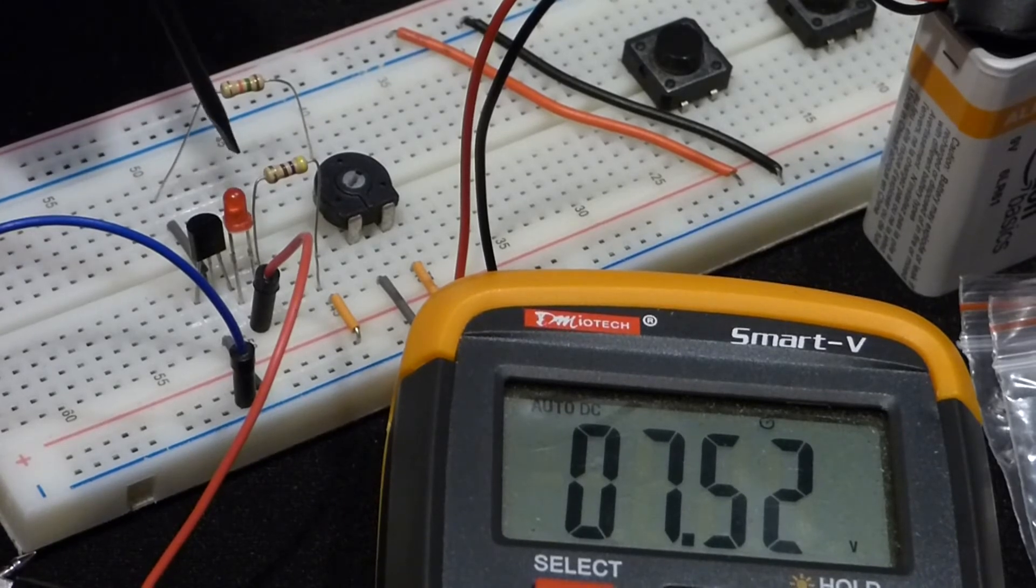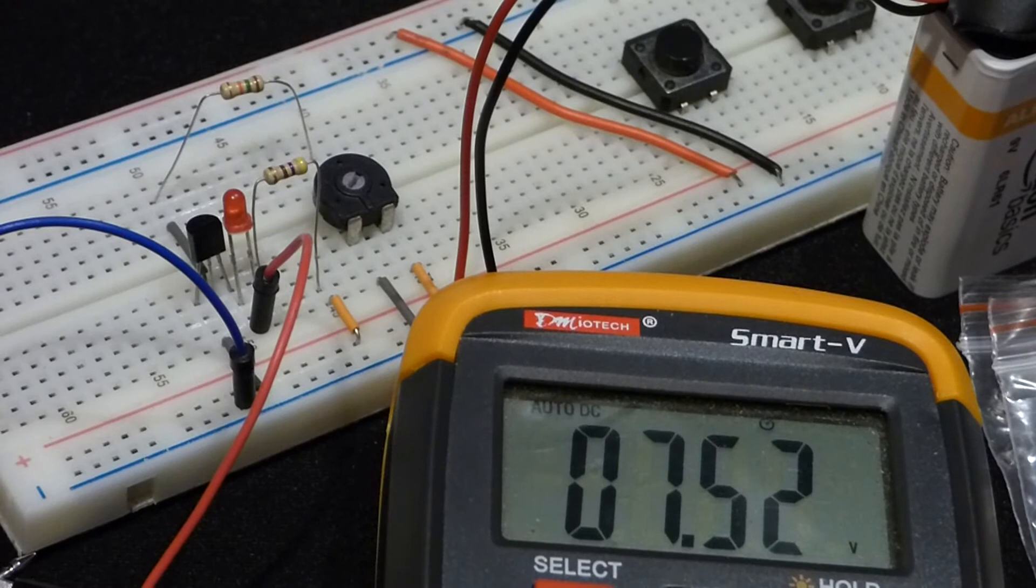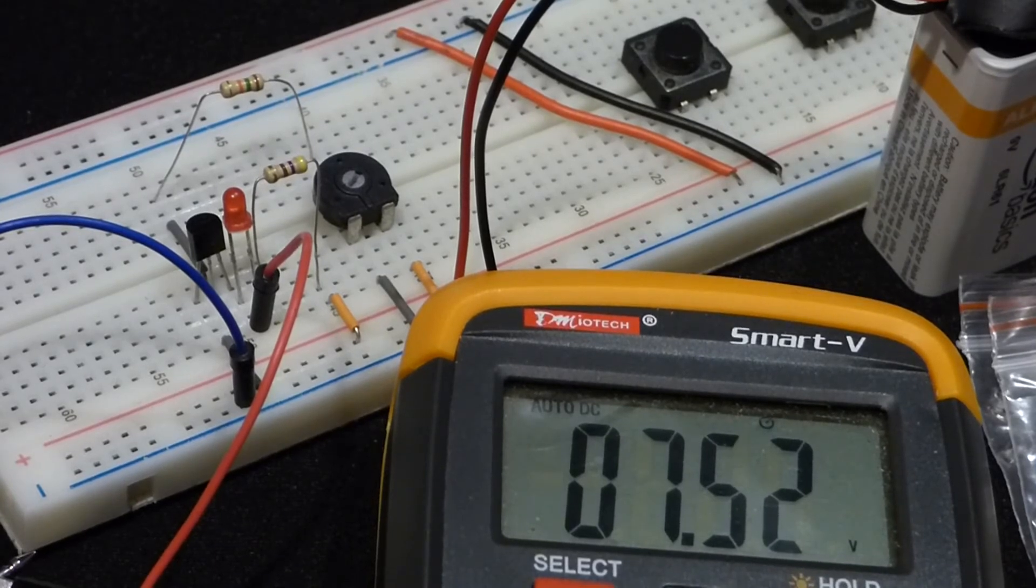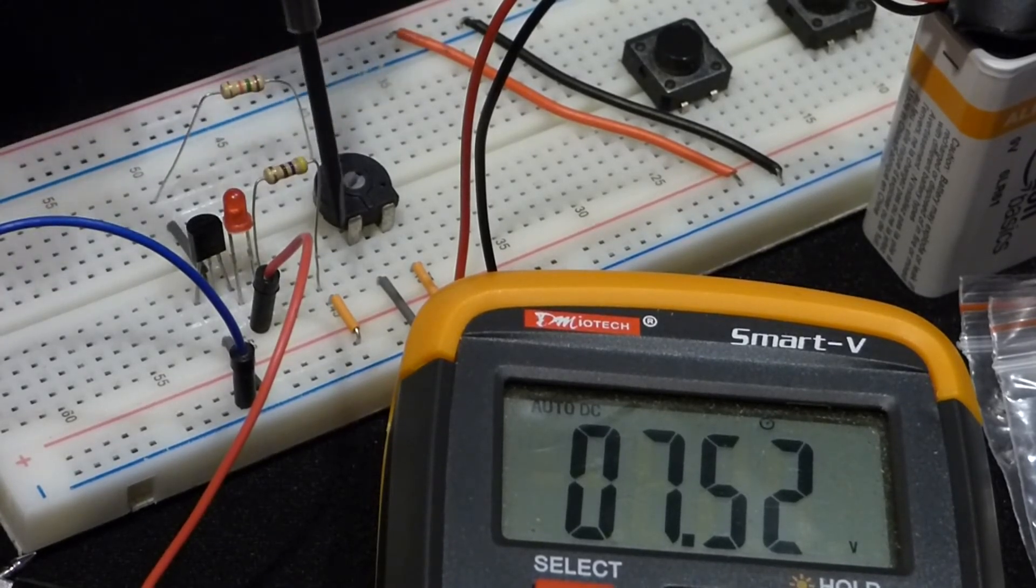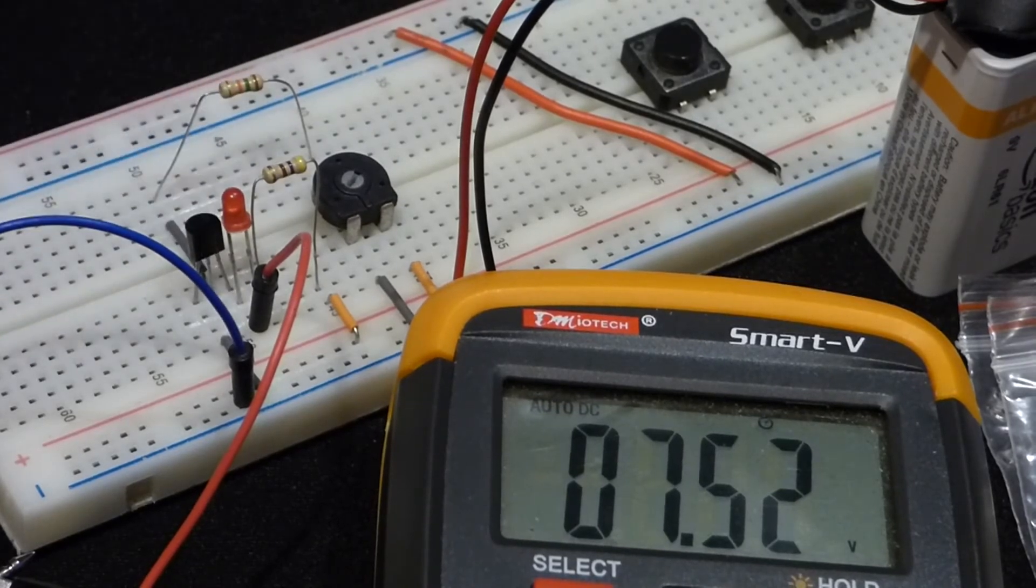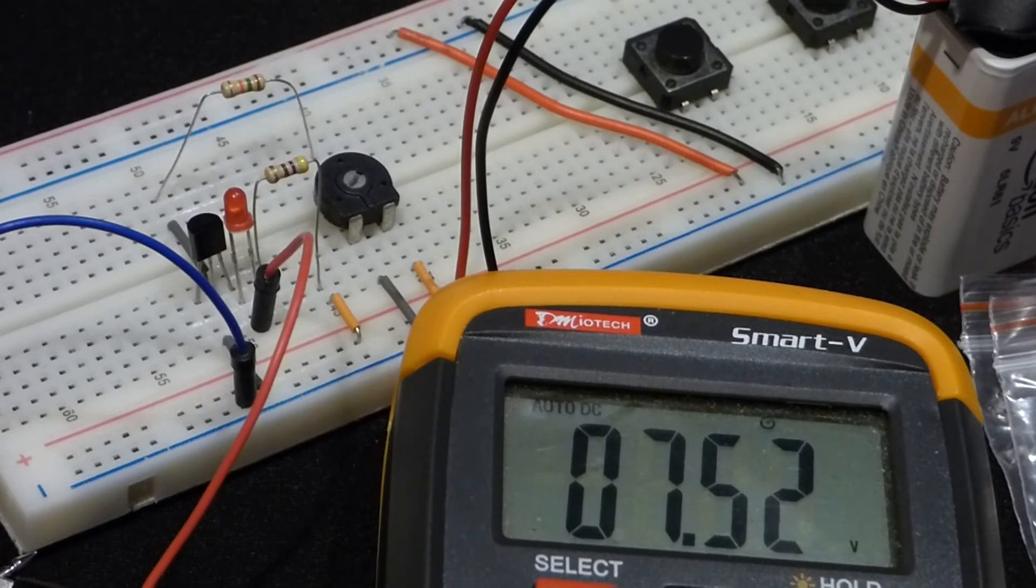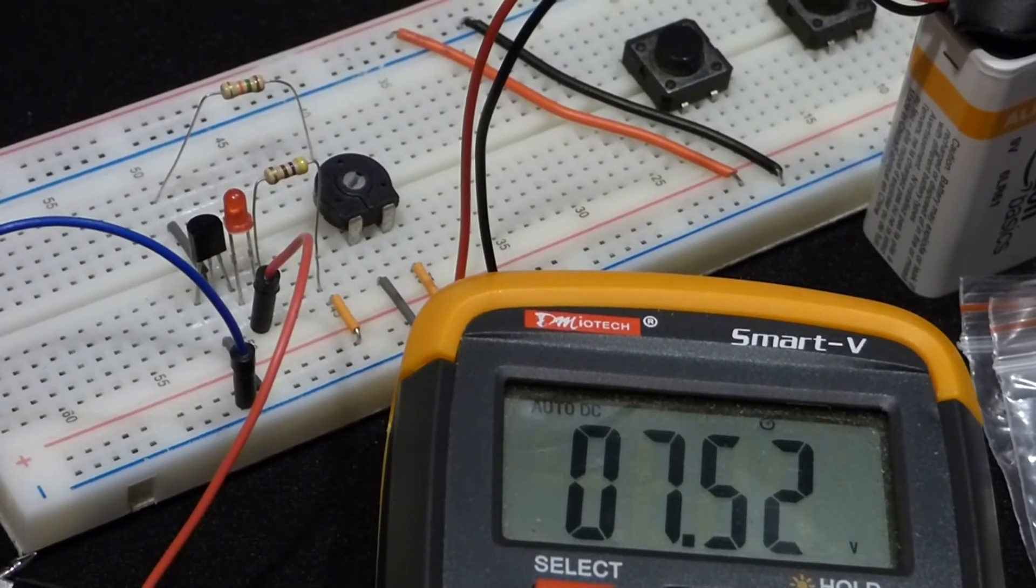But between the battery and the meter is this LED. This LED drops about 1.5 volts from the circuit. From the positive rail here through the collector emitter to the ground. It drops about 1.5 volts. So that's what we're measuring right now. The voltage there. The battery minus the LED.